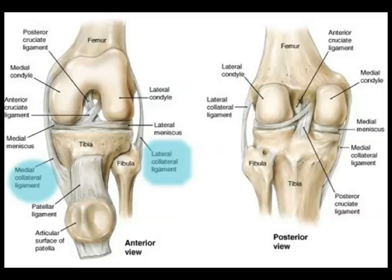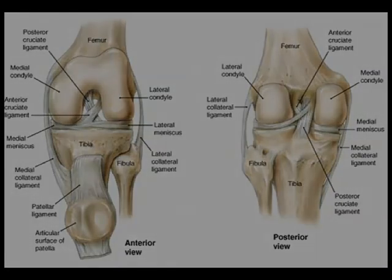Attached to the inferior aspect of the patella and the tibial tuberosity is the patellar ligament. The medial and lateral patellar retinacula run in between the collateral ligaments and the patellar tendon inferiorly. Just beneath these ligaments is the joint capsule of the knee, which is a thick fibrous sac filled with synovial fluid.